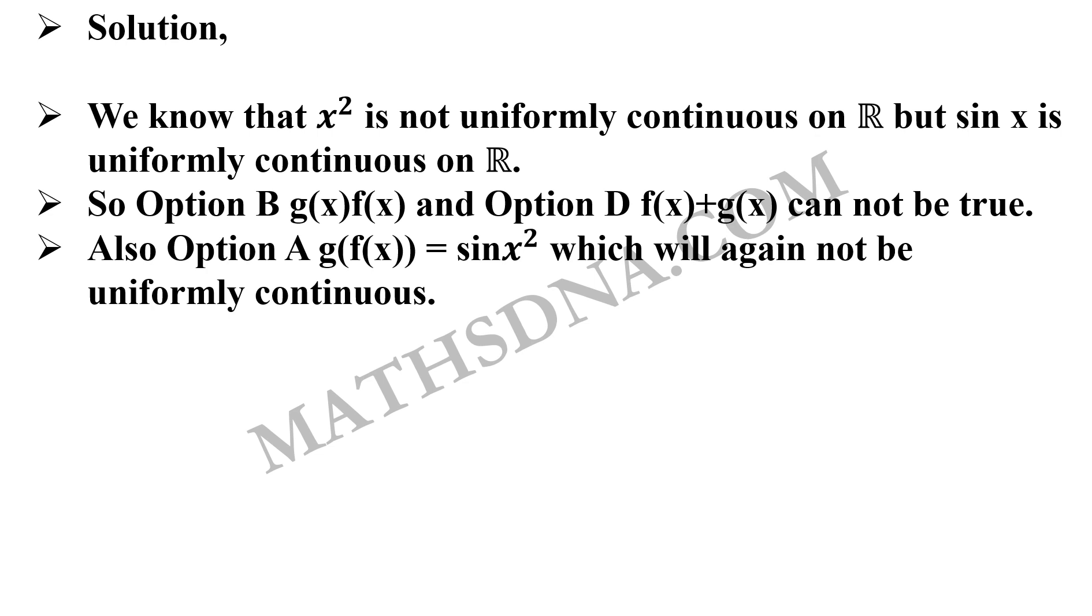Now, for option a, g(f(x)), that is equals to sin(x²). Again, it is having x² and we know x² is not uniformly continuous over R. So this will again not be uniformly continuous.